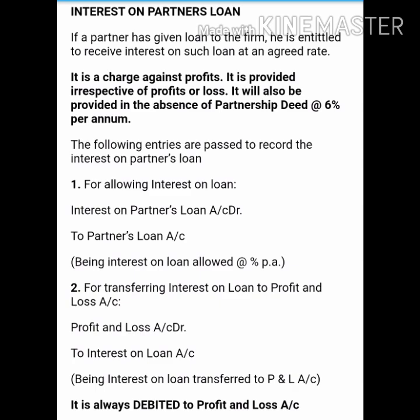It must also be noted that interest on partners' loan is not credited to the partner's capital or current account — it is credited to his loan account. The following entries are passed for interest on partners' loan: First entry is for providing interest — debit 'Interest on Partners' Loan Account', credit 'Partners' Loan Account'. The second entry is for closing the interest on partners' loan account.